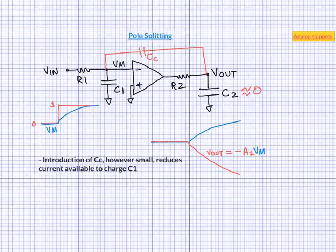And that means the node VM would now settle slower. And as a result, Vout would also settle slower. Now we can calculate how much slower the system would become, but the intuition here is that after adding CC, the overall system slows down.